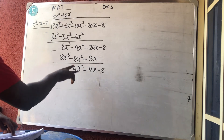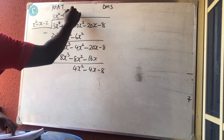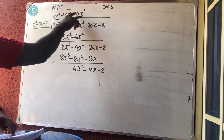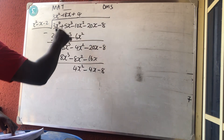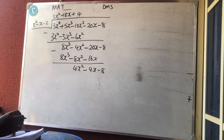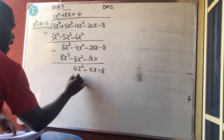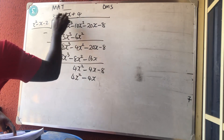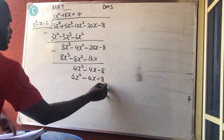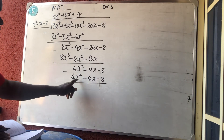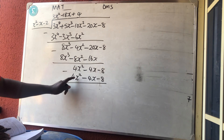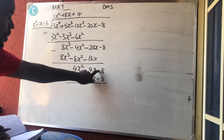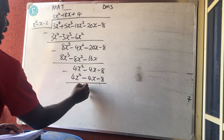The remainder 4x² still has degree equal to the divisor, so continue. Division: 4x² divided by x² gives +4. Multiplication: 4 times x² = 4x², 4 times −x = −4x, 4 times −2 = −8. Subtraction: 4x² − 4x² = 0, −4x + 4x = 0, −8 + 8 = 0. The remainder is zero.